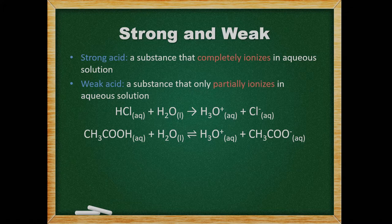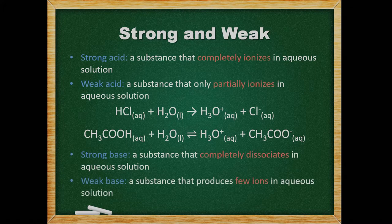In the equation, we use an equilibrium arrow which signifies how the acid only partially ionizes. Likewise, bases can also be strong or weak. Strong bases are usually oxides or hydroxides of group 1 and 2 metals.